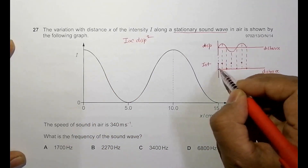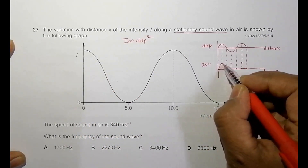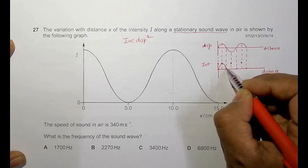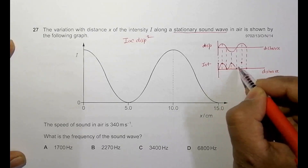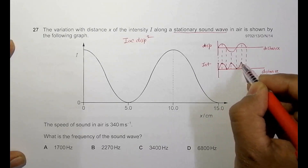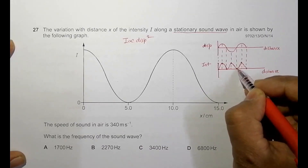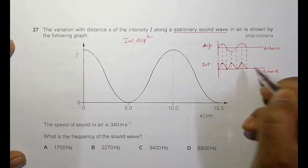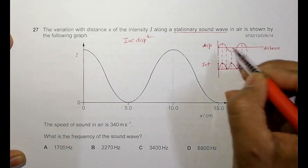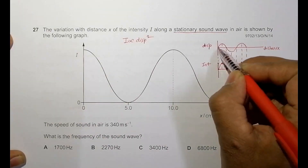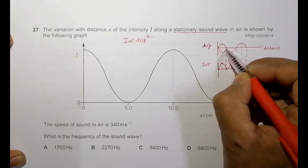The intensity graph will be somewhat like this: from zero it goes up, comes back, goes up again, comes back, and so on — the pattern repeats like that. The shape may not be perfect but the pattern follows. Now if a stationary wave is formed, the stationary wave takes shapes like this, oscillating back and forth.